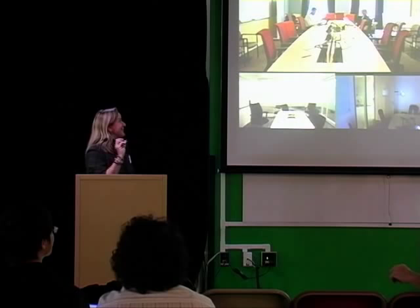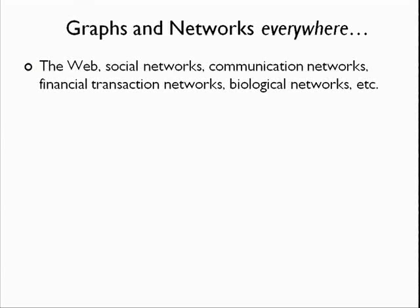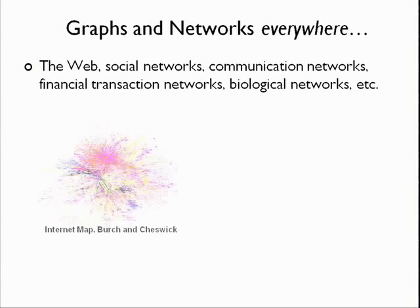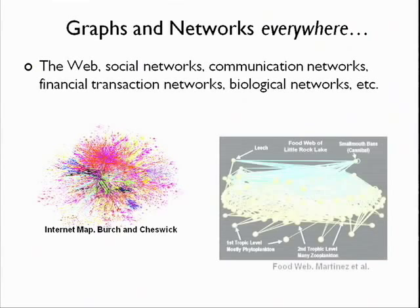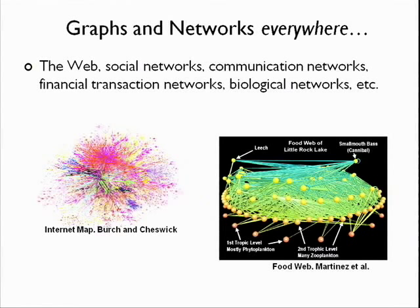I think this, especially to this crowd, is like no news whatsoever. There are graphs and networks everywhere. In particular, one of the largest graphs around is the web, but there's a lot of other kinds of data that can be thought of as graphs or networks — social networks, communication networks, financial transaction networks, biological networks, and a lot of others. You can find nice visualizations of these on the web, like a picture of the internet or a food web describing different species and who eats who.